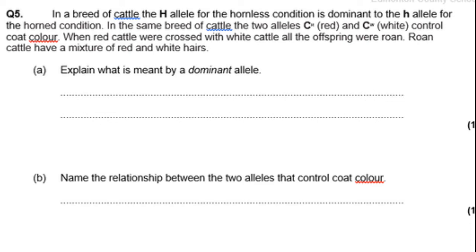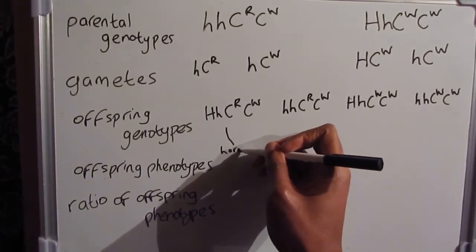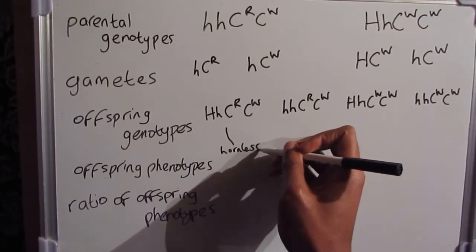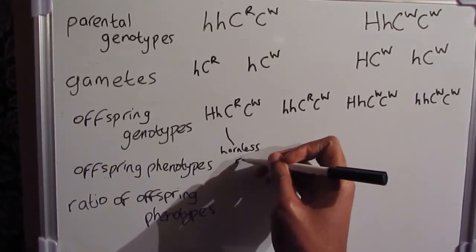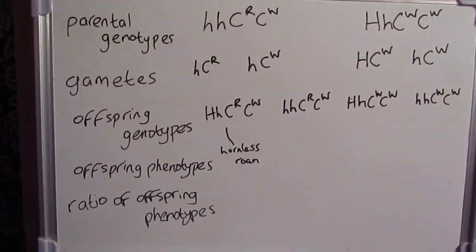Our first offspring genotype is heterozygous for our horned condition. So that must mean that they are hornless. Whereas they have both R and W for the coat, which means that they're roan. So the first offspring phenotype will be hornless roan.